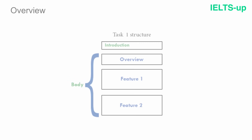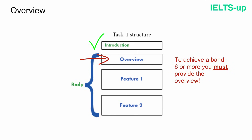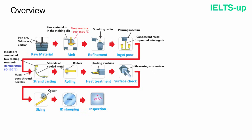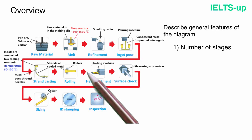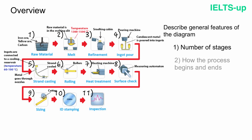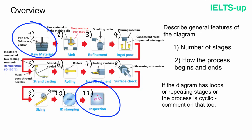Now let's move on to the next paragraph — the general overview. This is a very important paragraph. To achieve a band 6 or more for task 1, you must provide the overview. In the overview paragraph, you describe general features of your diagram. But unlike line graphs, pie charts, and bar charts, process diagrams have no general trends or key changes to identify. That's why, while giving the overview, you should write the number of stages — in this process we have 11 stages — and how the process begins and ends. If the diagram has loops, repeating stages, or is cyclic, you may also want to comment on that.